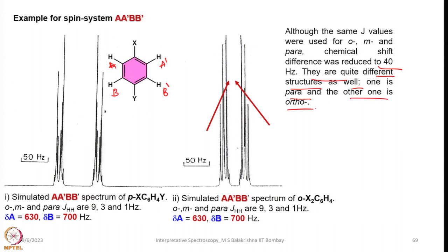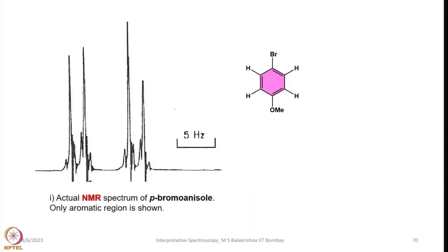For example, in the simulated AA'BB' spectrum for this molecule, in all cases the coupling constants are taken as 9 Hz, 3 Hz, and 1 Hz respectively. Here delta_A is 630 Hz and delta_B is 700 Hz, whereas in the other case delta_A equals 630 and delta_B equals 700 Hz, but the pattern is very different and you can again see the pyramidal effect. These two protons look identical — they are chemically equivalent but not magnetically equivalent — and so what we get is an AA'BB' spin system.